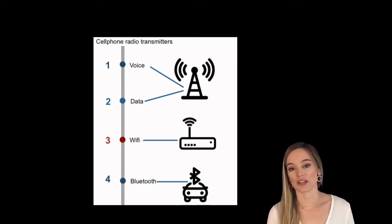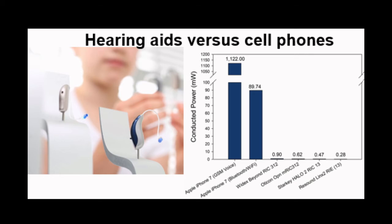As soon as there's communication via bluetooth for example between the cell phone and the hearing aid there is emission of electromagnetic energy. So let's have a look at a comparison between cell phones and hearing aids.